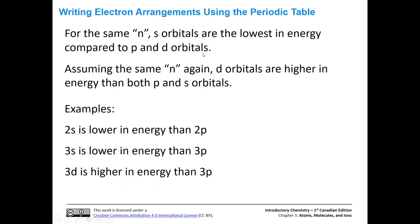For the same n, s orbitals are the lowest in energy — compared to p and d orbitals, as we saw on our orbital energy diagram. Assuming the same n, d orbitals are actually higher in energy than both p and s orbitals. So basically it goes s, p, d — with d being highest and s being lowest in energy.